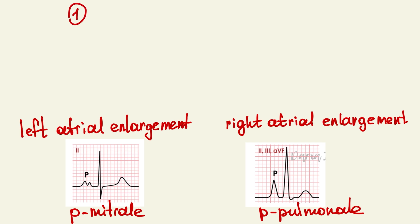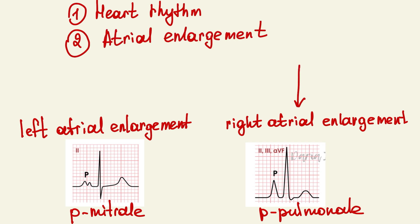P wave can help us interpret heart rhythm and atrial enlargement. Right atrial enlargement looks like this. You can see tall peaked P waves greater than 2.5 millimeters. Left atrial enlargement looks like this. Duration of P wave is greater than 0.1 seconds and you can see broad notched P waves.